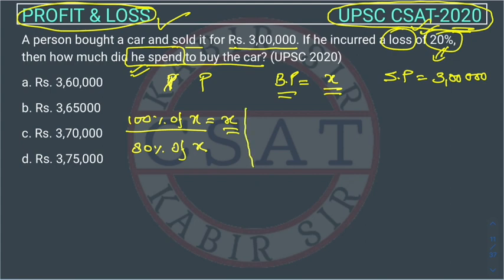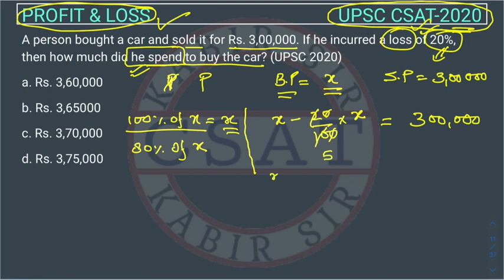We can write all the steps: the initial price is x, and there is a loss, so we use x minus 20% of x, which equals 3 lakhs (our selling price). We can take x as common, so it becomes x times (1 minus 1/5) equals 3 lakhs.